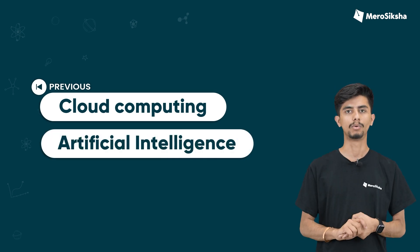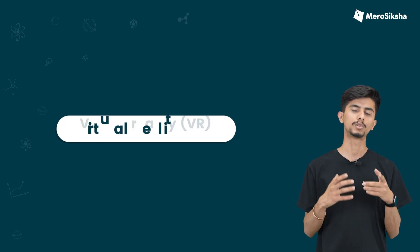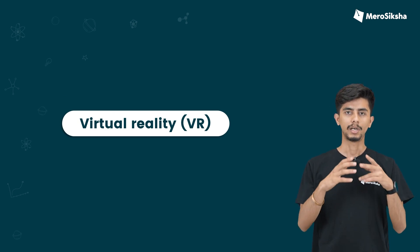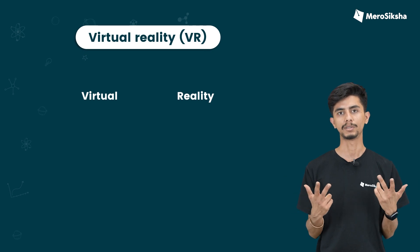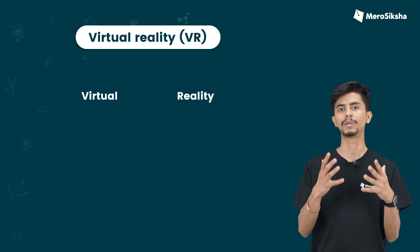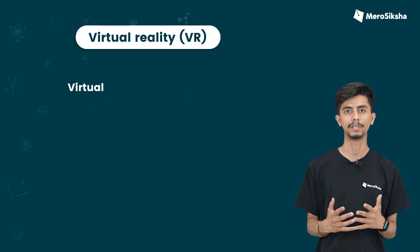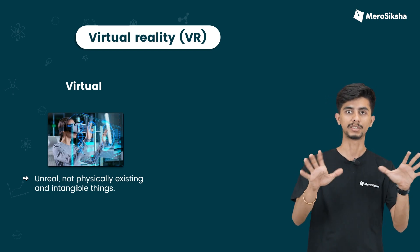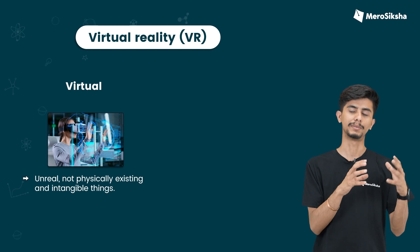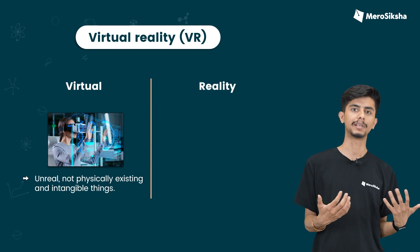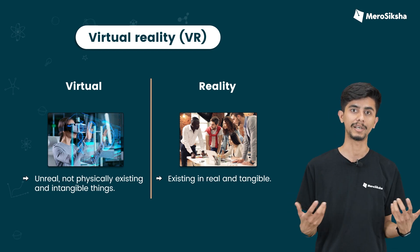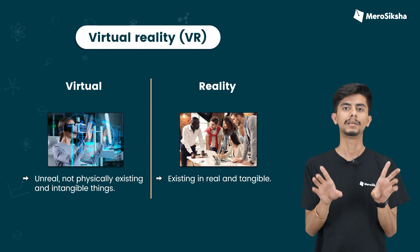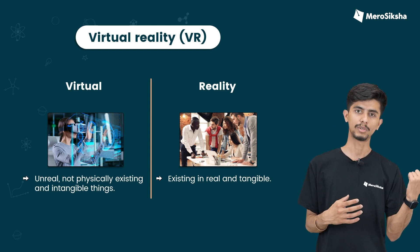I am going to learn a new buzzword type of technology called Virtual Reality. Virtual Reality is an unreal thing that exists in reality. It is tangible, it is possible to watch it. It is a contradictory word — it is virtual and it is real.